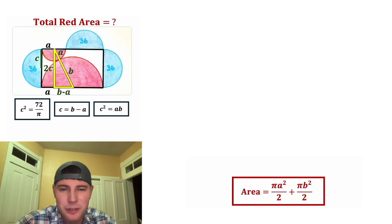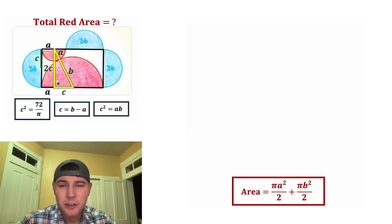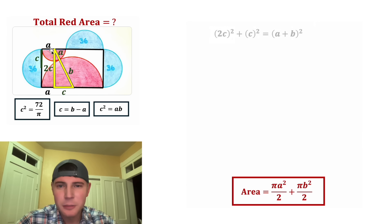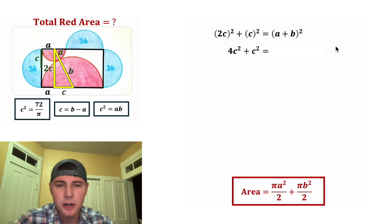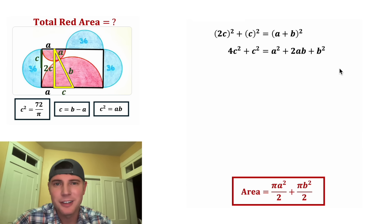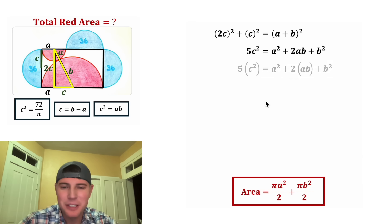Now we have three equations and three variables — we should be able to solve from here. Notice that b − a matches our earlier b − a, so let's relabel that side as c, and apply the Pythagorean theorem again: (2c)² + c² = (a + b)². That gives 4c² + c² = 5c², and the right side expands to a² + 2ab + b².